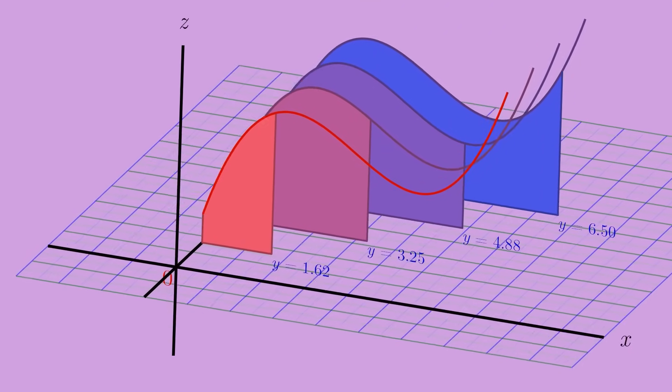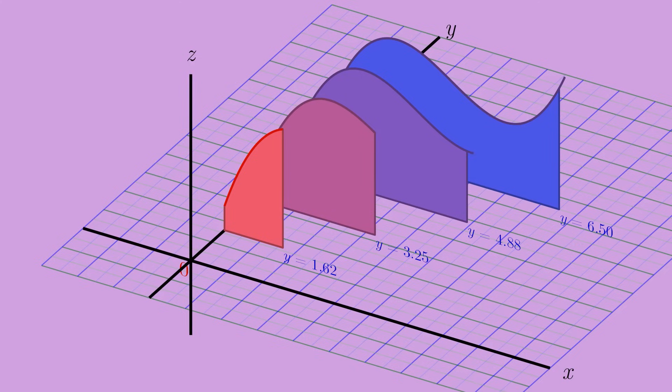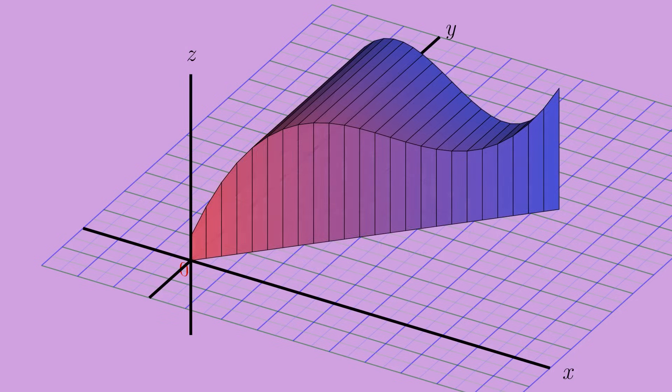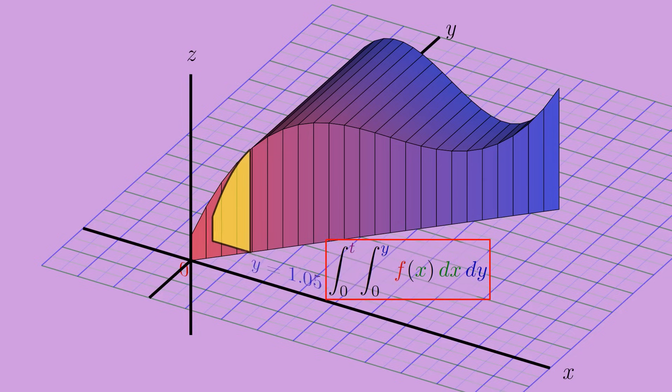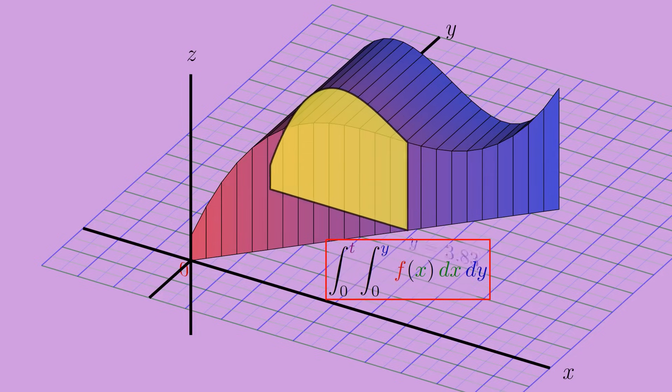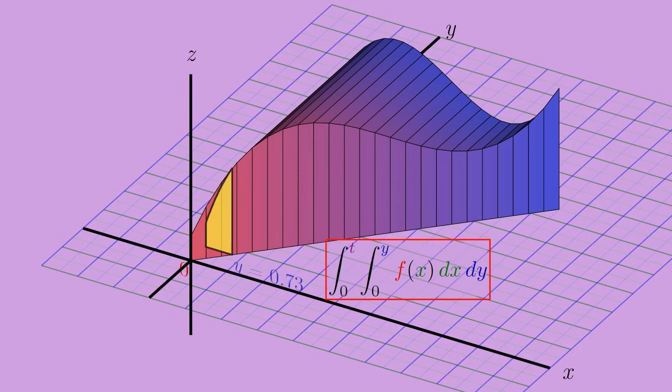But now let's place all these different integration areas together on their own separate y-axis, where their position on the y-axis reflects the value of y used to define that particular area under the curve. If I fill in the gaps with all the infinitely many other areas for all the other values of y, we get a solid whose volume is the double integral we want. And our original double integral computes the volume of the solid by first finding the area of an arbitrary slice of the solid along the x-axis, and then integrating these slices along the y-axis, starting from y equals zero and ending at y equals t, to carve out the volume of the solid. Neat!